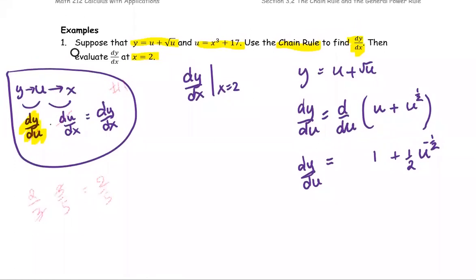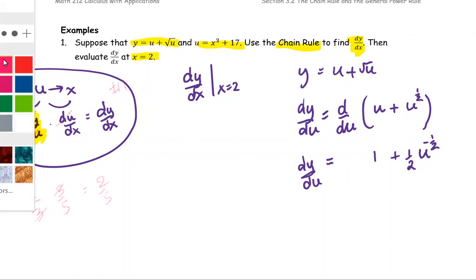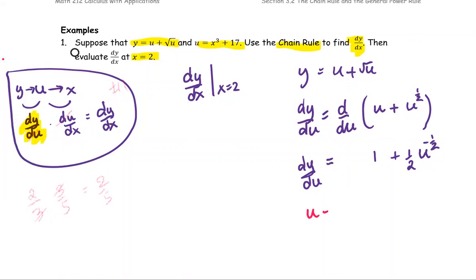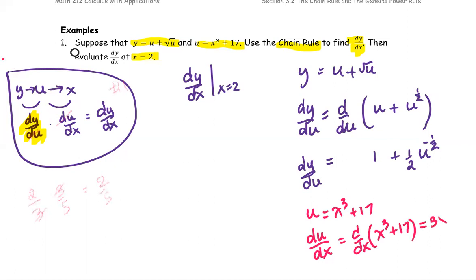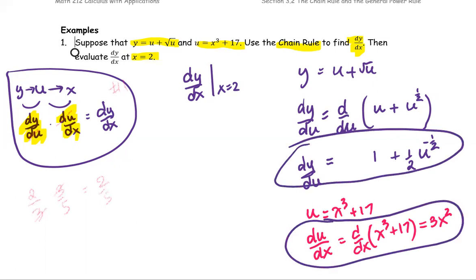Next, find the derivative of u with respect to x using another color to distinguish. For u equals x to the third plus 17, du/dx is the derivative of x cubed plus 17, which gives us 3x squared. Now we have du/dx. By the chain rule, dy/dx equals dy/du — which is 1 plus one-half u to the negative one-half — multiplied by du/dx, which is 3x squared.